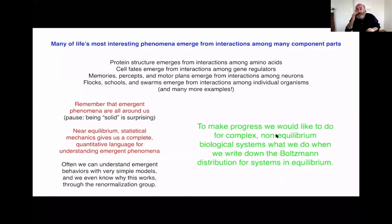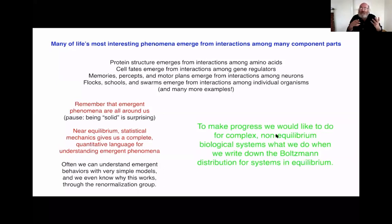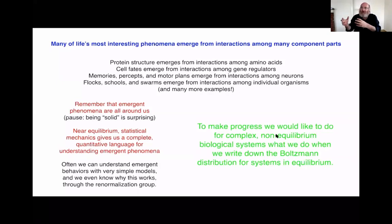The reason that approaches from statistical mechanics are so relevant to biological systems is that many of the things we notice and admire about the function of biological systems are things that emerge from interactions among a very large number of component parts. Even the structure of a single protein molecule - proteins are composed of 100 or more individual amino acids, and the structure they adopt, which ultimately determines their function in the cell, emerges from interactions among those hundreds of amino acids.